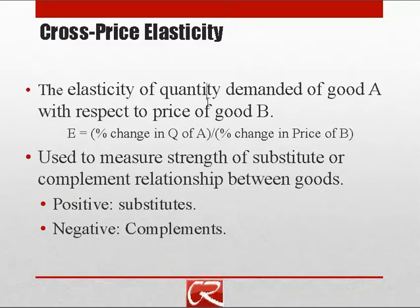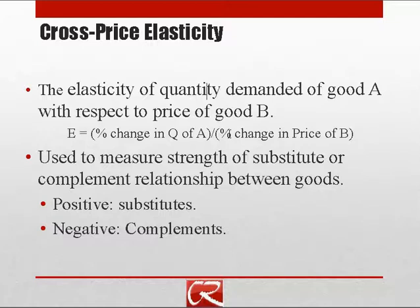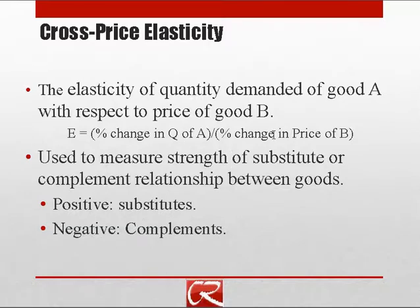Cross price elasticity measures the responsiveness of the demand for one good to the price of another — crossing from the quantity demanded of good A to the price of good B. Formally, the cross price elasticity of demand is the percentage change in the quantity demanded of good A over the percentage change in the price of good B. One of the main applications is measuring whether two goods are substitutes or complements, and the strength of that relationship.